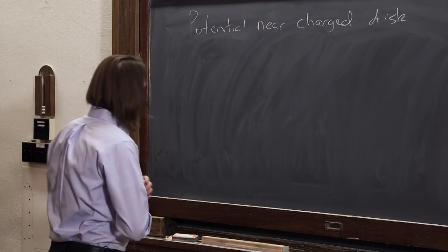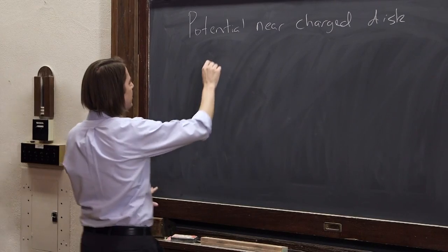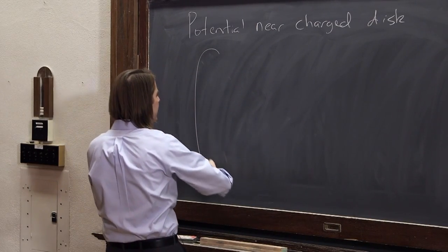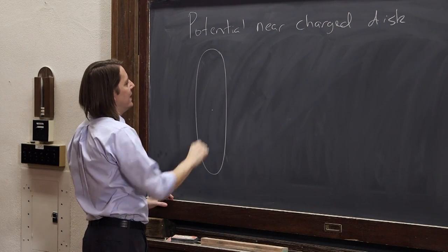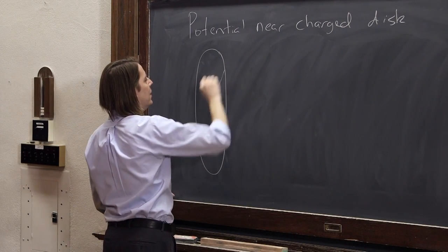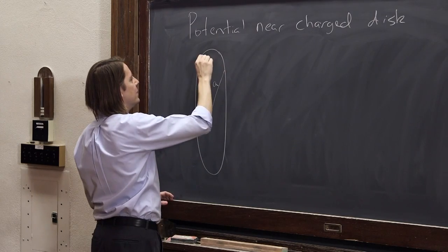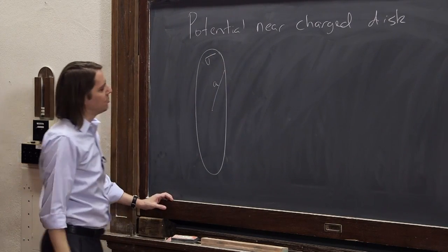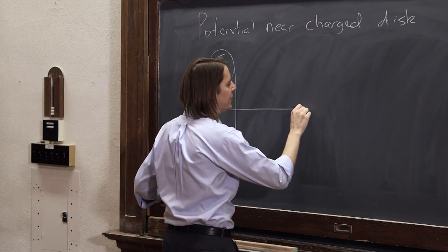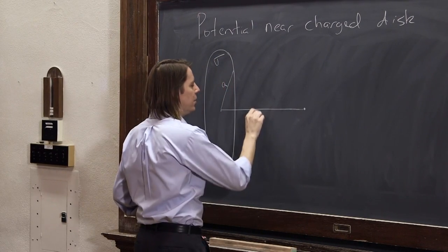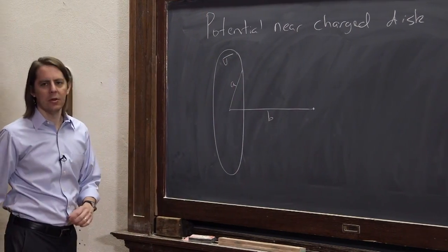So let's do one more. The charged disk would look something like this. Great big disk. I have it sort of in the plane of the board. It's got a radius, we'll say a. It's got a charge density, sigma. And we want to know the potential on its axis at some point out here, a distance b along its axis.